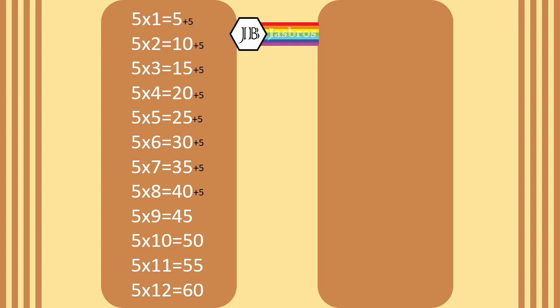Forty plus five equals forty-five. Forty-five plus five equals fifty. Fifty plus five equals fifty-five. Fifty-five plus five equals sixty. You can continue the table by adding five.